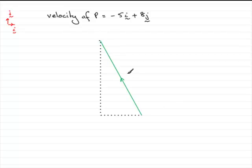This vector is the velocity of p, which I could write like that, and is minus 5i plus 8j. So how do we get the speed, the magnitude of this vector?